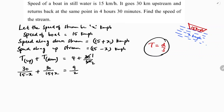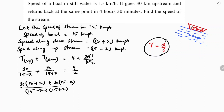Taking LCM of (15 plus x) and (15 minus x), the left side becomes: 30 times (15 plus x) plus 30 times (15 minus x), all over (15 minus x)(15 plus x), equals 9 by 2.